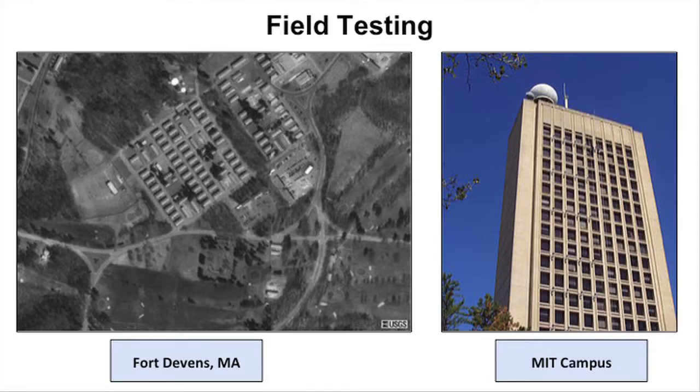We're going to do some field testing in a couple of weeks. We have a prototype that we'll deploy on MIT campus and also either at Fort Devens or Hanscom Air Force Base, so we have a bigger area to work with. We're internally calling the project CATAN, which stands for Communications Assistance Technology over Ad Hoc Networks. If you have any feedback, criticism, or other ideas, please let us know — we'd love to hear from you.